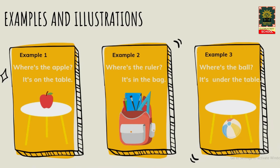Examples and illustrations. Look at example one. Look at the picture, lalu kita baca pertanyaannya. Where's the apple? Sesuai dengan gambar, jawabannya adalah It's on the table. Buah apelnya ada di atas meja.